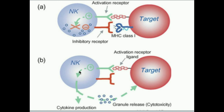Natural killer cells are very similar to cytotoxic lymphocytes that are part of the adaptive system. One important similarity is that cytotoxic lymphocytes also use the perforin pathway — they can puncture a hole with perforin, insert granzymes and granulisins, and also induce apoptosis in a target cell.